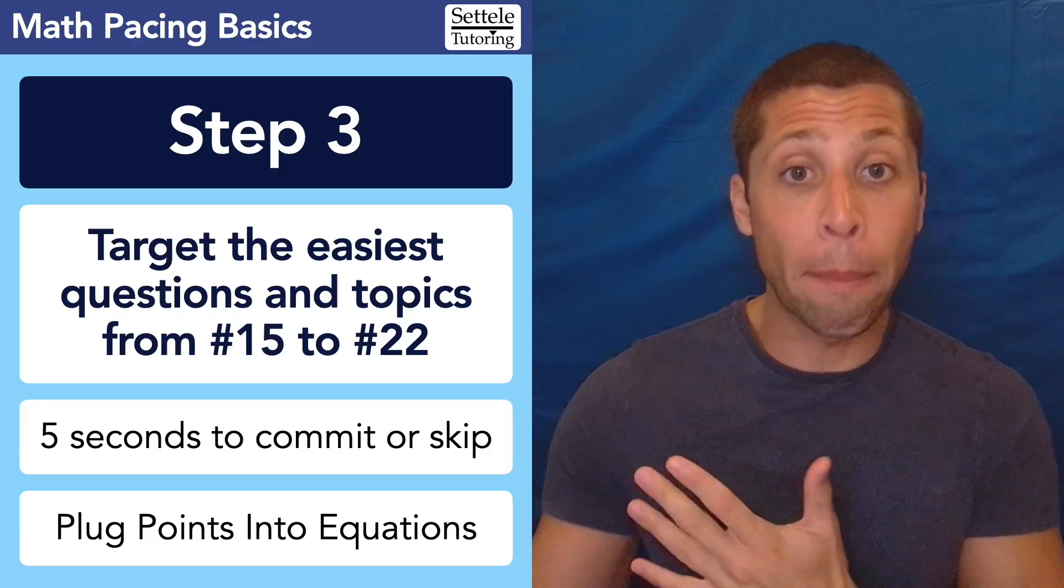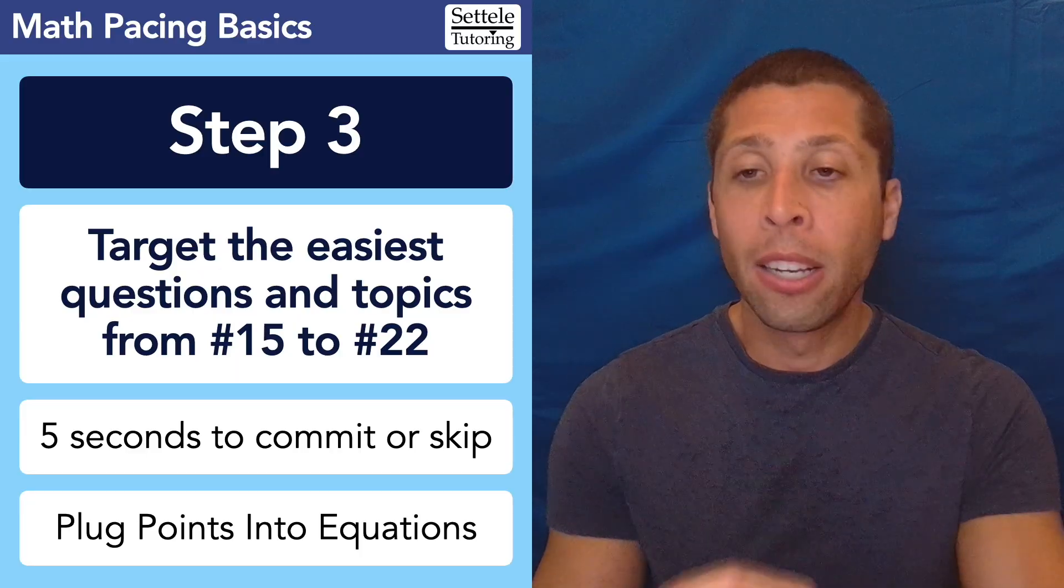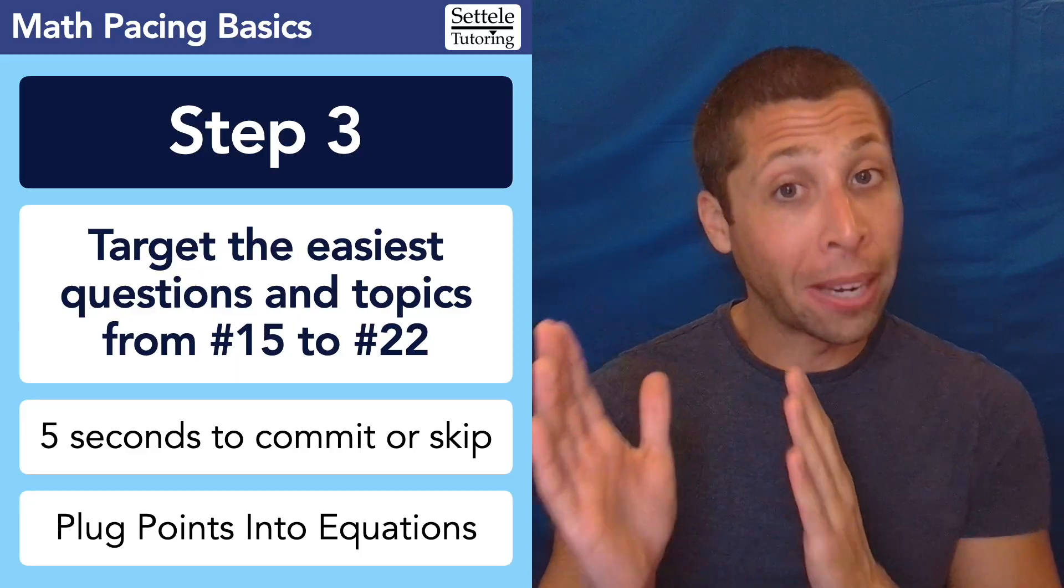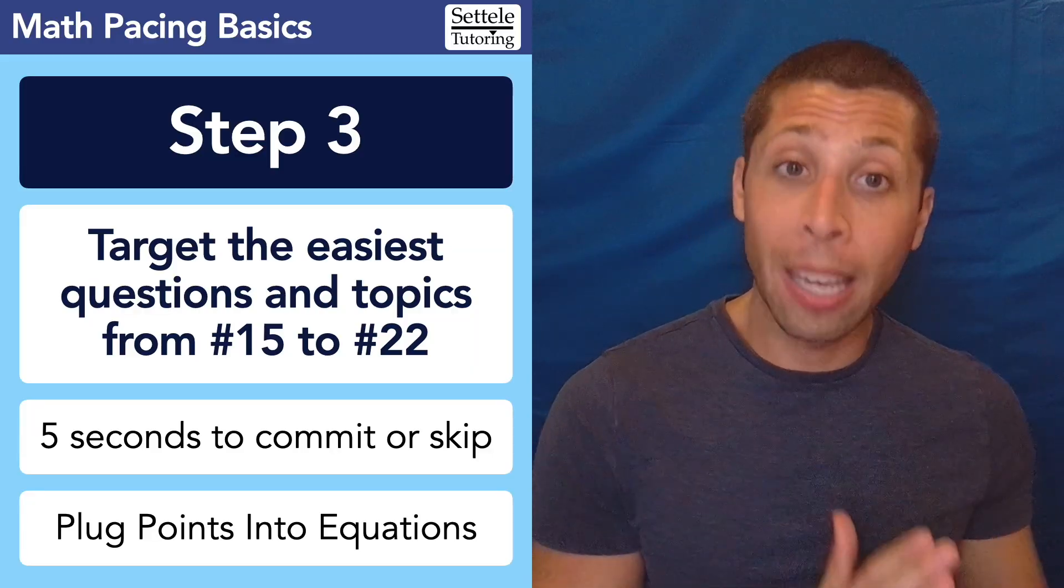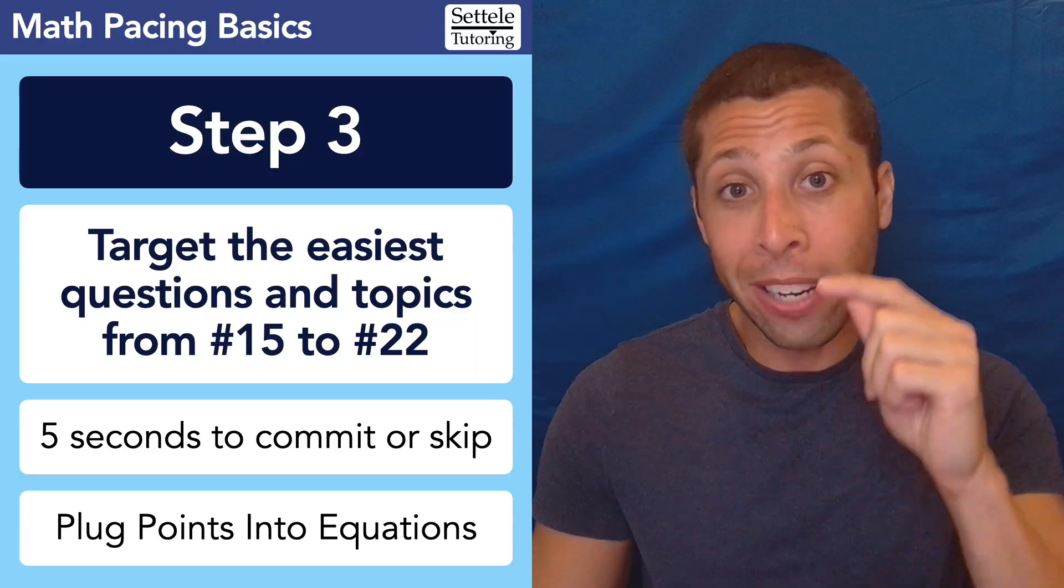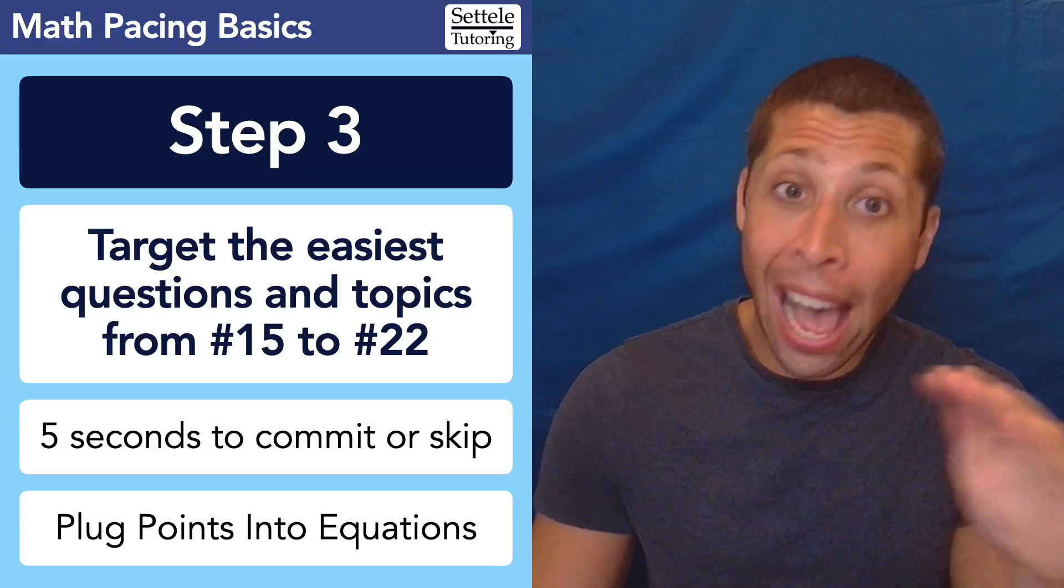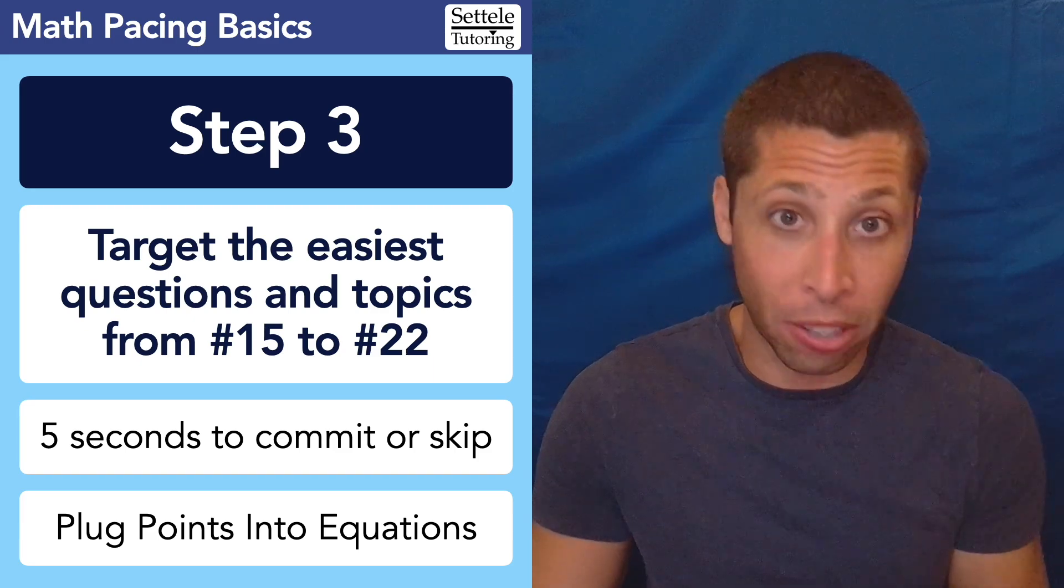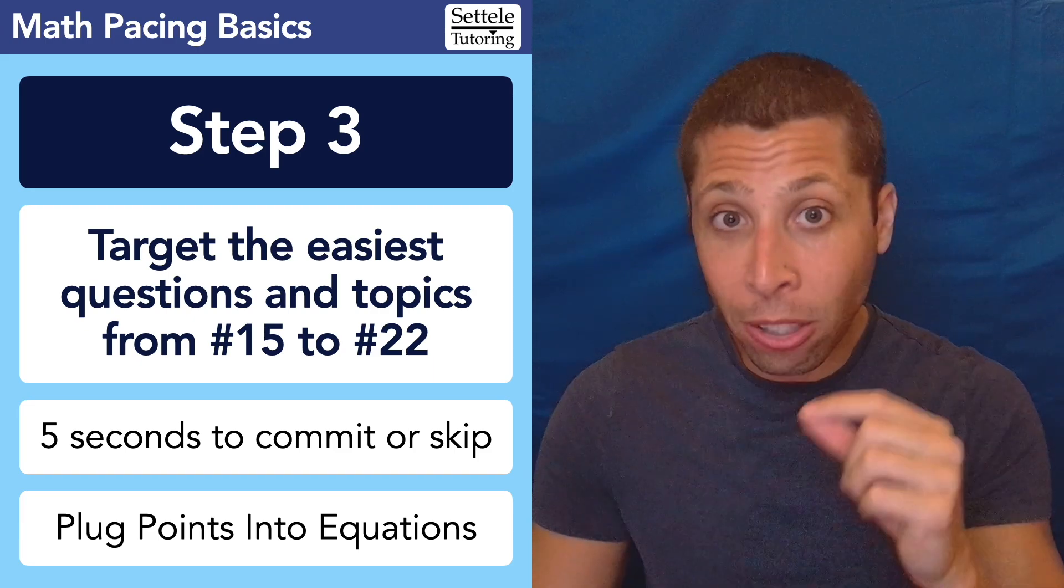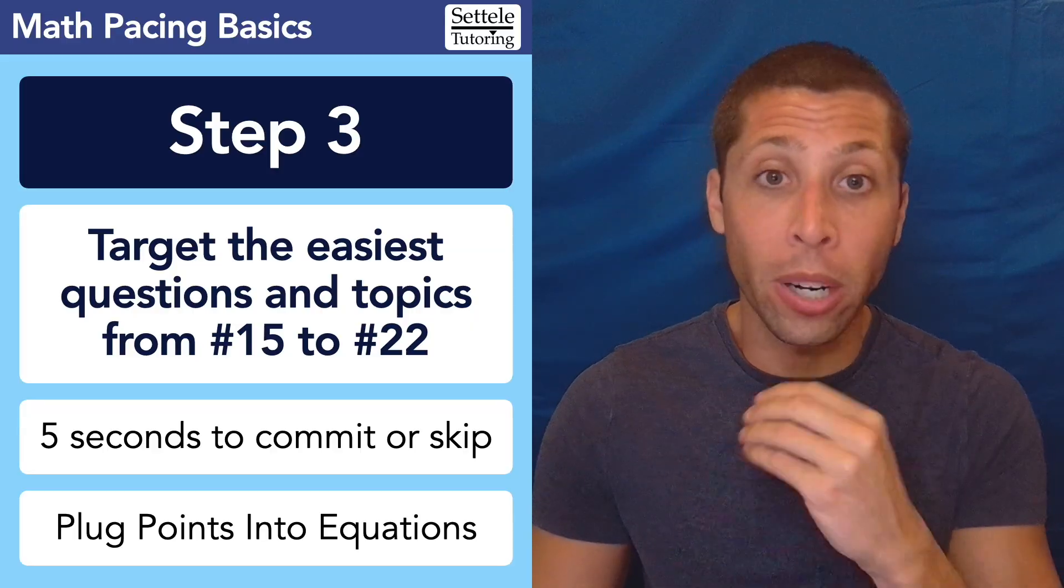So every time you flip to a new math question in this set, just take five seconds to look at it and decide: am I going to commit to answering it or am I going to skip it for now? Skip it maybe entirely. The reason we want to make sure that if we do decide to do it, we are committing to it, is we don't want to half-solve a bunch of questions and end up guessing randomly anyway. If you decide to do it, you've got to work your way through.